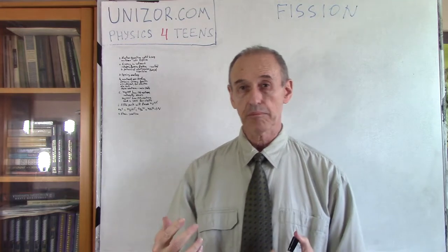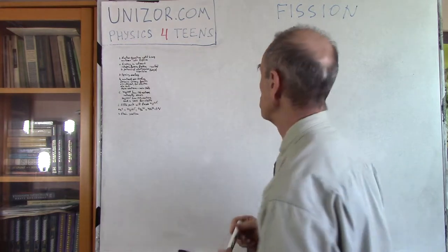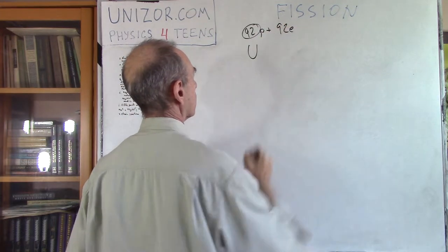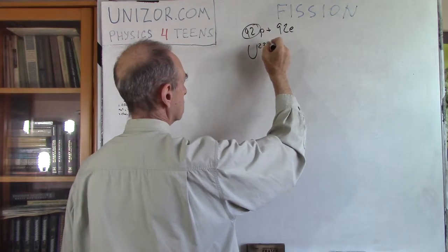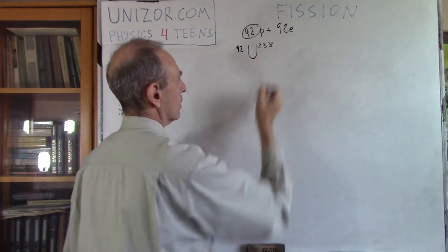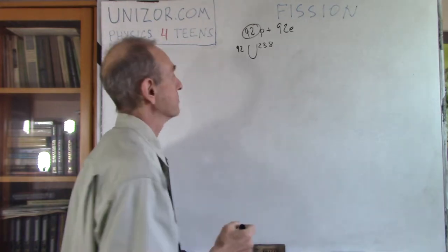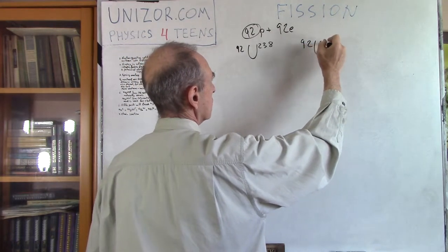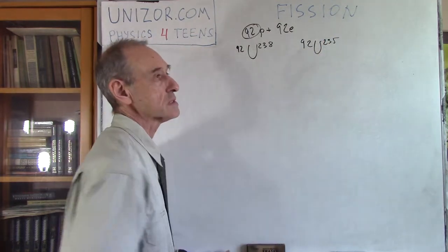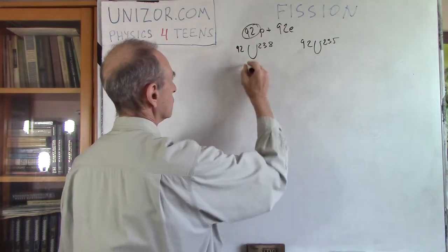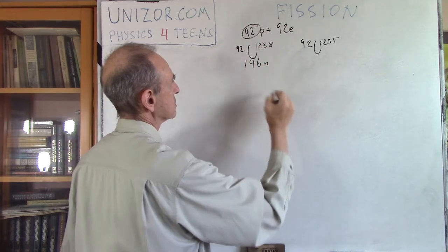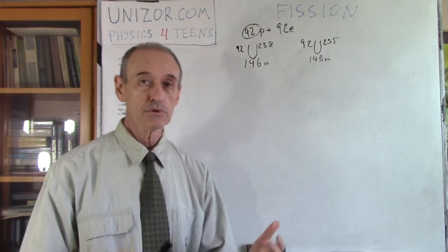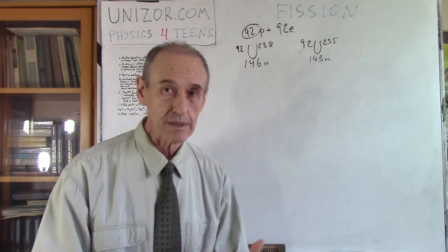As an example, consider two isotopes of uranium. Uranium always has 92 protons and 92 electrons. Uranium-238 has atomic mass 238, meaning 92 protons and 146 neutrons. Uranium-235 has three fewer neutrons — just 143 neutrons. As we know, the fewer neutrons you have, the less stable and the easier the nucleus is to break. So uranium-235 is easier to break than uranium-238.